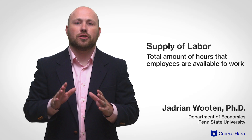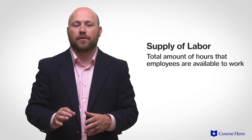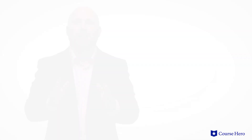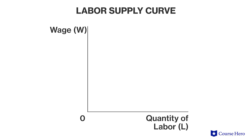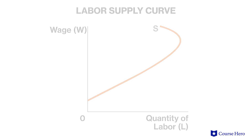The supply of labor is the total amount of hours that employees are available to work. As with labor demand curves, labor supply curves are analogous to supply curves in the goods market in that they represent the price of labor, the wage, versus the quantity of labor supplied.